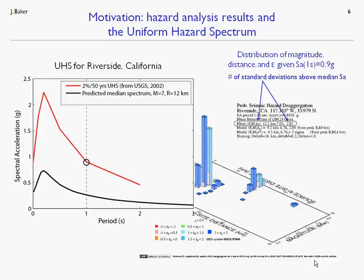The big discrepancy comes from the third parameter in the de-aggregation plot, indicated by the color coding of the bars — the epsilon parameter. Epsilon tells us how many standard deviations larger than the median prediction are these ground motion spectral accelerations. In this case, epsilon of 2 means we are about 2 standard deviations larger than median predictions on average. I've added a third line: the median plus 2 standard deviation prediction from the Boore and Atkinson model for magnitude 7 earthquakes at 12 kilometers. The key point is that our uniform hazard spectrum, especially in seismically active areas, is not the spectrum associated with average ground motions — it's two to three times larger in spectral acceleration amplitude than that median spectrum.